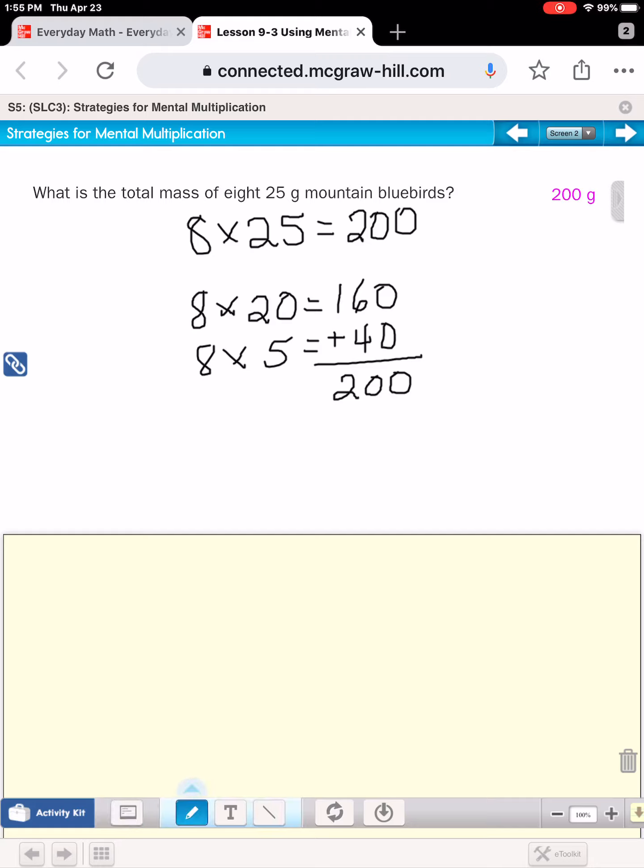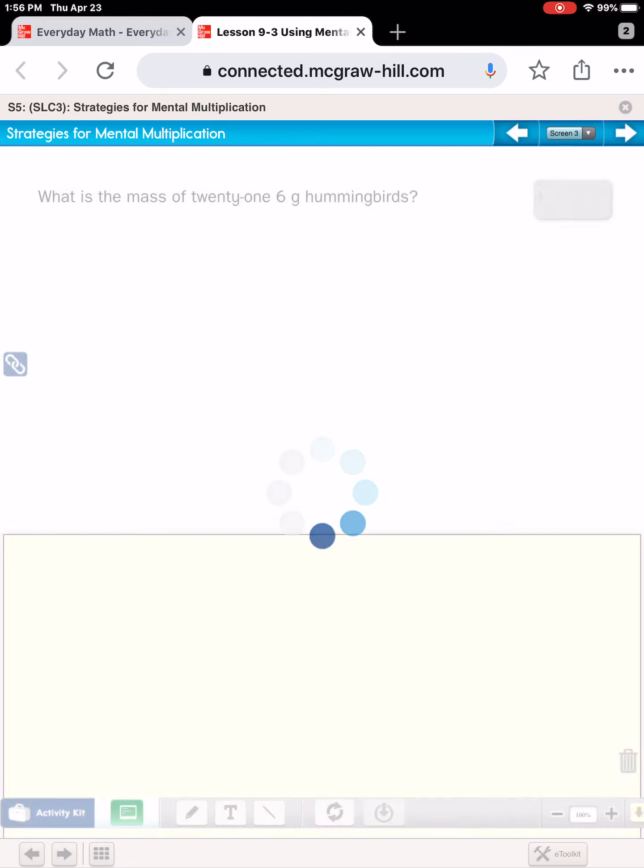Now, you could also in this problem, break apart the eight instead of the 25. I could break apart the eight into four and four. In that case, I would have four times 25 plus four times 25. And when I think about money, it's easy for me to know that four times 25 is 100. Four times 25 is 100. And when I add those two, I still get 200. So when you have eight times 25, you can break apart either one of the factors into easier numbers to be able to solve mentally. I'm writing down the answers, but it's just to show my mental process.